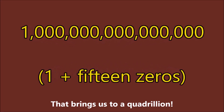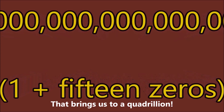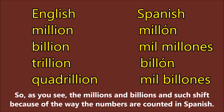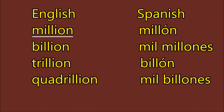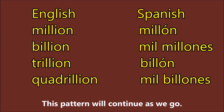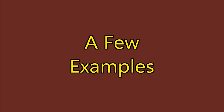That brings us to a quadrillion. A quadrillion in Spanish is un mil billones. As you can see, the millions and billions and such shift because of the way the numbers are counted in Spanish. This pattern will continue as we go. Let's take a look at a few examples of how to formulate the quadrillions.